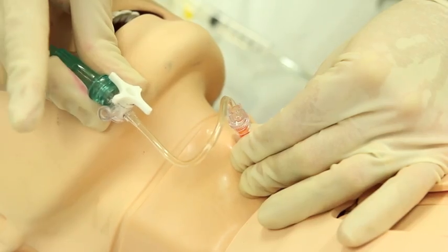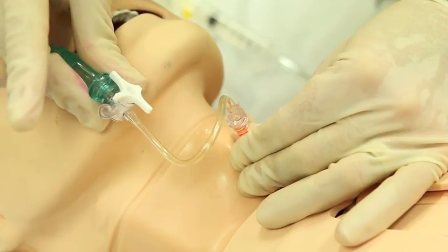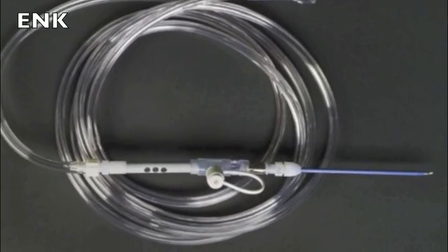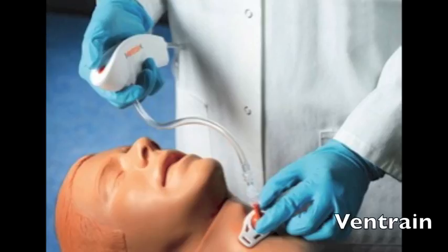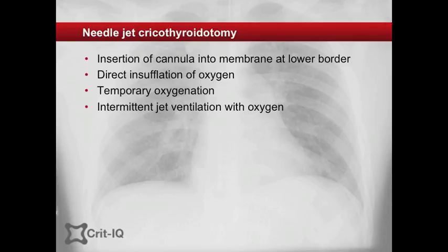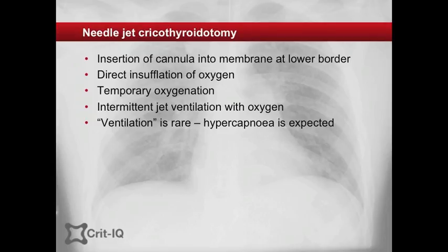A number of makeshift methods for this have been proposed. Commercial kits such as the ENC and the Ventrain are also available. It is important to recognise that this method allows for oxygenation only. Ventilation is not possible in any meaningful way. In most patients, the chest is not expected to rise or fall and the CO2 will inevitably rise. However, to avoid hyperinflation, a period of exhalation is still required.